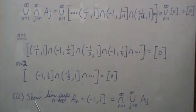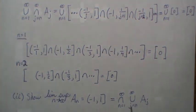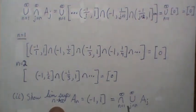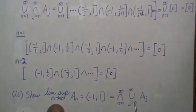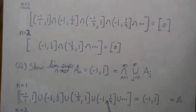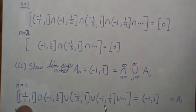Now let's show that the limit supremum of A_N is [-1,1]. This is the definition of limit supremum — I put it here to fit it on one page. So this is what we have to figure out. Let's write out a few of these cases.